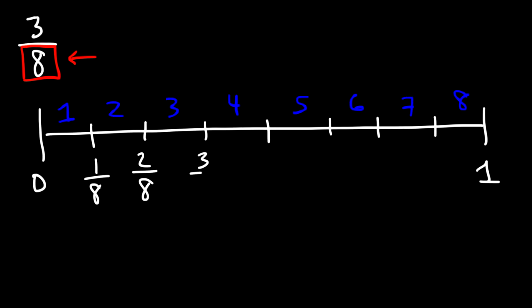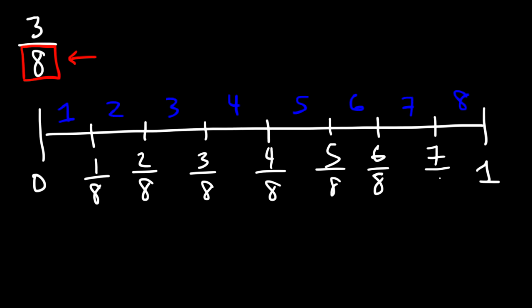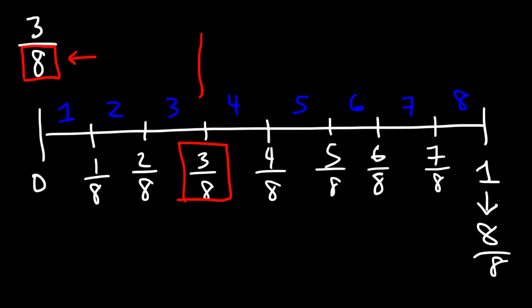So this is going to be 1 over 8, 2 over 8, 3 over 8, then 4 over 8, 5 over 8, and keep counting all the way until you reach 1, which is 8 over 8. We need to identify 3 over 8, and so it belongs right here along the number line.